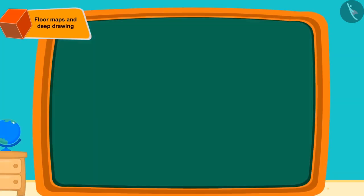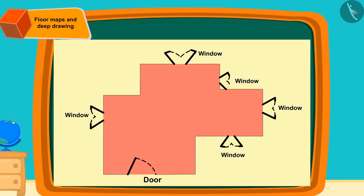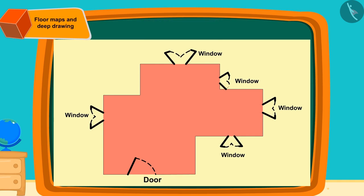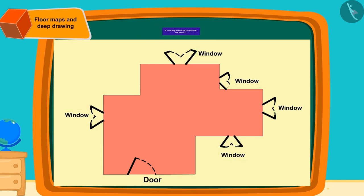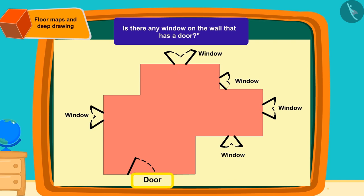Can you tell by looking at the map of the floor how many windows there are? Yes, the floor map has five windows.